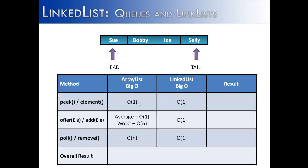Looking at all three operations we compared — peek/element, offer/add, and poll/remove — for accessing the first element it takes constant time for both, so it's a tie. There's a slight advantage with the LinkedList for adding an item to the end, due to ArrayList's capacity issue; if it runs out of capacity, the LinkedList wouldn't have that problem. And for poll or remove, the advantage is definitely the LinkedList, because removing from the front does not carry nearly the penalty that an ArrayList would. Overall, the reason queues are often implemented as LinkedLists is that for two of the three major operations, the LinkedList has an advantage over an ArrayList.